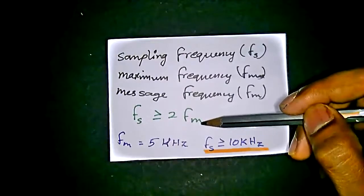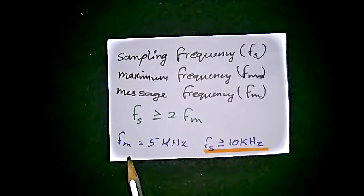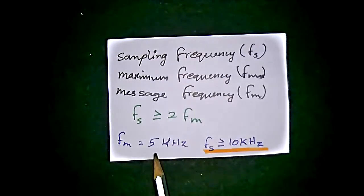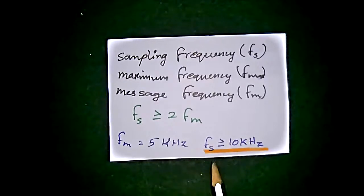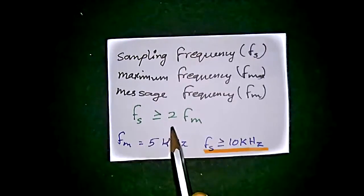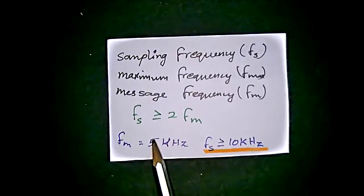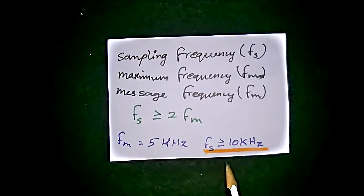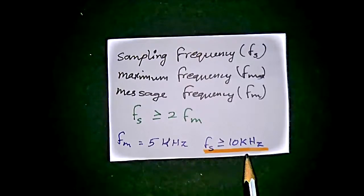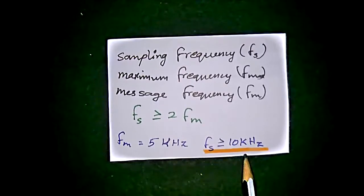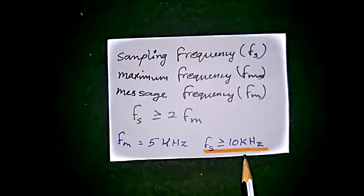Here, fm is given as 5 kilohertz, so two times five gives 10 kilohertz. Therefore, fs should be greater than or equal to 10 kilohertz. The sampling frequency is valid only when it is greater than or equal to 10 kilohertz.